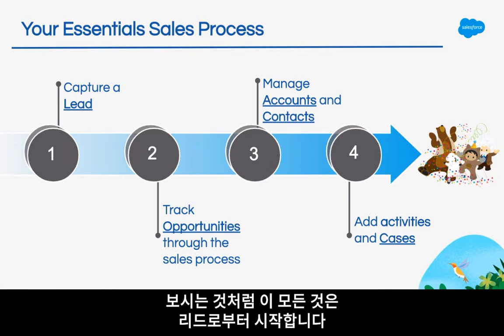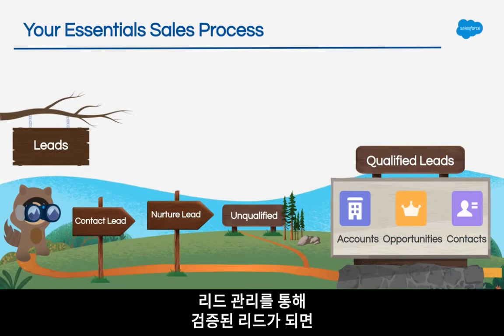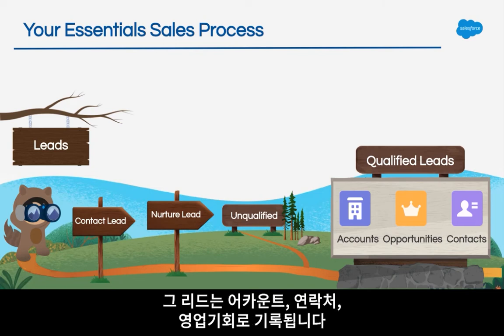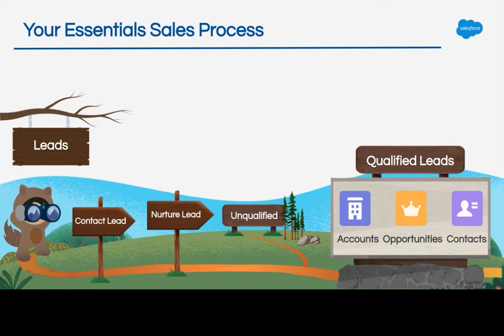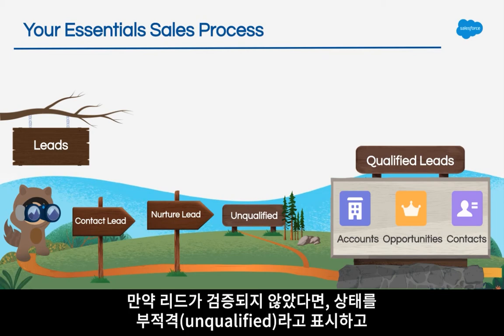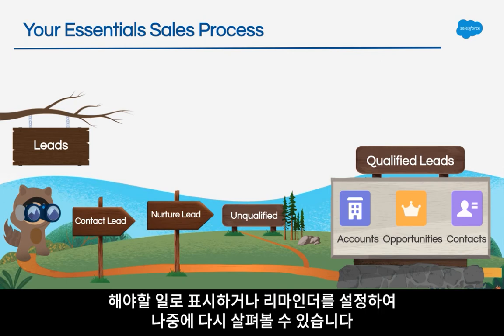As you can see, it all begins with leads. If I have contacted and nurtured my lead and have deemed it as qualified, then my lead will become an account, contact, and opportunity record. If the lead is not qualified, you mark the status as unqualified and can then set a reminder or task to come back to this lead at a later date.